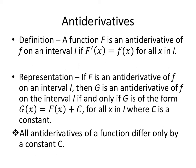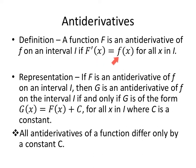An anti-derivative — anti means opposite of derivative. A function capital F is an anti-derivative of little f on an interval I if F prime, the derivative of capital F of x, is equal to little f of x for all x in I. Mathematicians are very specific: capital F denotes the anti-derivative and little f the original function. So capital F prime — the derivative of the anti-derivative — equals the function.